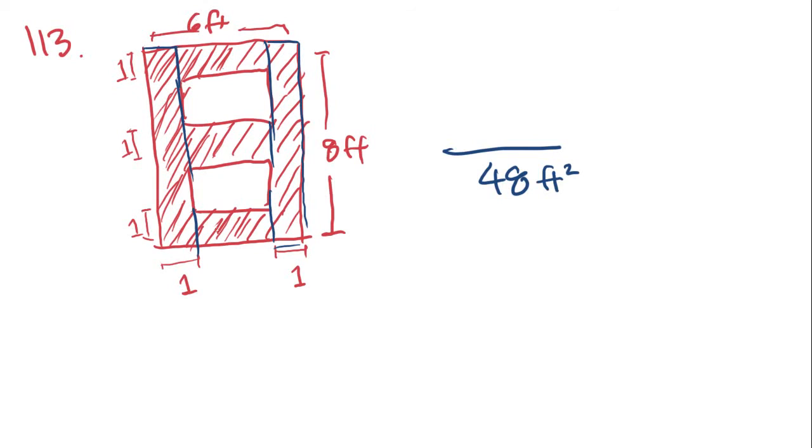Now, we know this is 1 and this is 1, so this middle part is going to be 6 minus 1 minus 1, that's 4. So 4 times 1 is going to be 4, so that part's 4, this part is 4 as well. 8 times 1 is going to be 8, and that's 8 on this side. So 8 plus 8 plus 4 plus 4 plus 4 is going to get you 28.